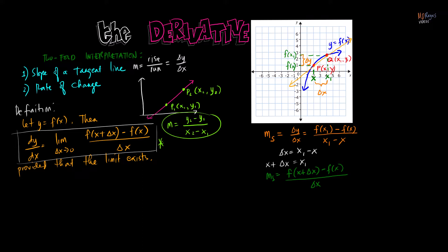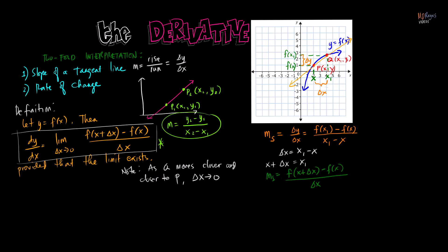Now, looking at the graph: if we move Q closer and closer to P, what happens to delta x? As Q moves closer and closer to P, delta x approaches zero. And graphically, as Q goes closer to P, the secant line becomes almost a tangent line. The limiting position of the secant line is actually a tangent line.